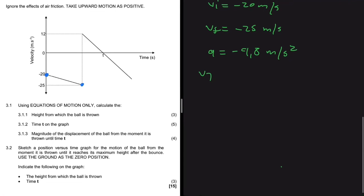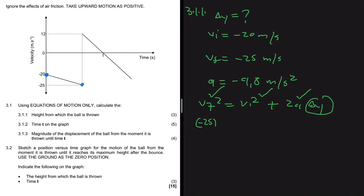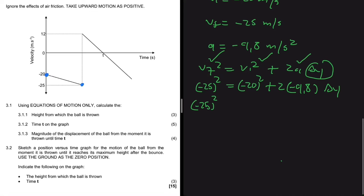Using vf² = vi² + 2a·Δy: vf is minus 25 (the velocity at which the object strikes the ground), vi is minus 20 (the velocity at which it is thrown), and a is minus 9.8. The physics is done — now we solve the math. We get: (−25)² − (−20)² = 2 × (−9.8) × Δy, taking vi² to the left-hand side.